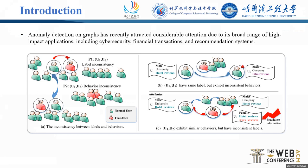The background of this work is as follows. Anomaly detection on graphs has recently attracted considerable attention due to its broad range of high-impact applications. Although many efforts have thus far been made, how to effectively handle the high inconsistency between users' behavior and labels — a fundamental issue in anomaly detection — has not yet received sufficient concern.